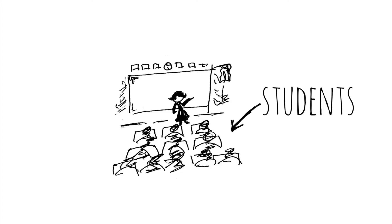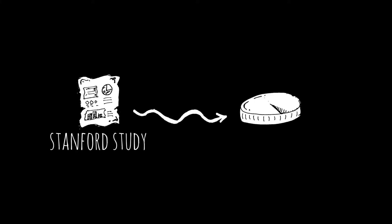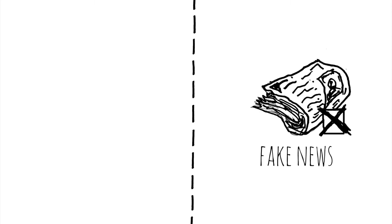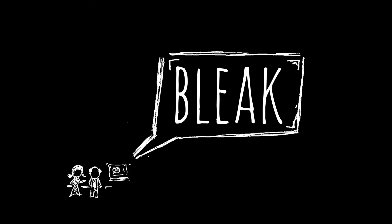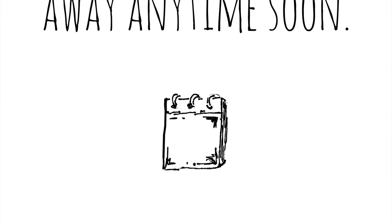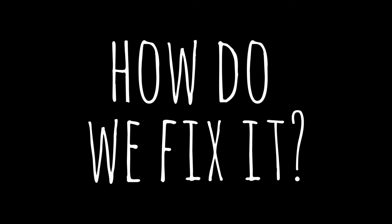We see this with students. According to a Stanford study, only 25% of high school students were able to identify an accurate news story compared to a fake one. Students also had a hard time distinguishing between real and fake photographs as well as authentic and staged videos. Researchers used the words bleak and dismayed to describe this. But it's not going away anytime soon, and that's a very real problem.